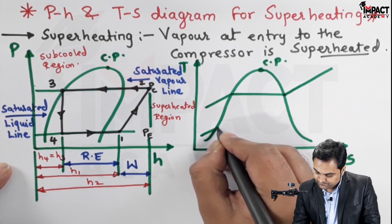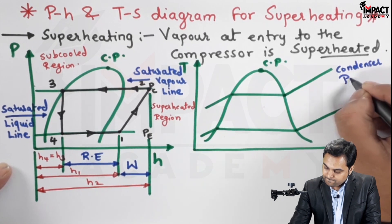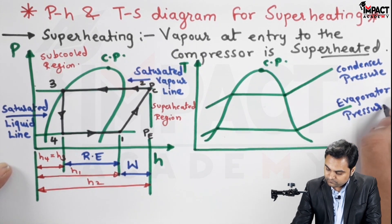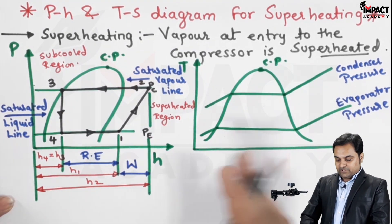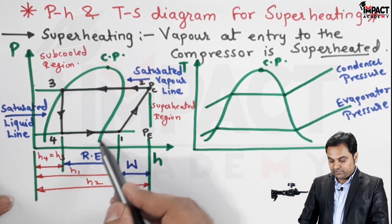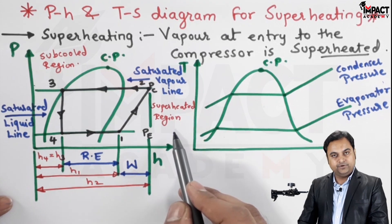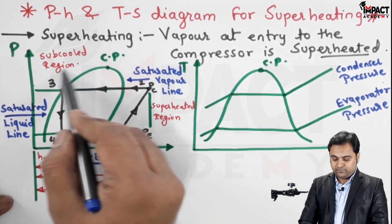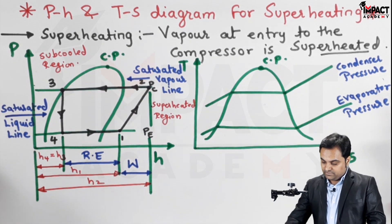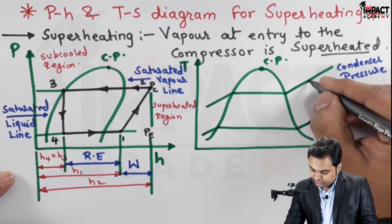Drawing two constant pressure lines on the T-S diagram: the higher pressure is condenser pressure and the lower pressure is evaporator pressure. Similarly to the P-H diagram, the saturated liquid line is on the left and saturated vapor line is on the right. The superheated region is to the right of the saturated vapor line, and the sub-cooled region is to the left of the saturated liquid line. Point one is plotted in the superheated region, and compression is isentropic so entropy remains constant.